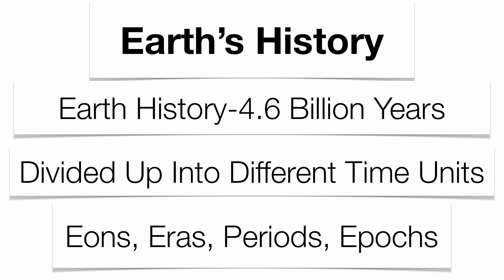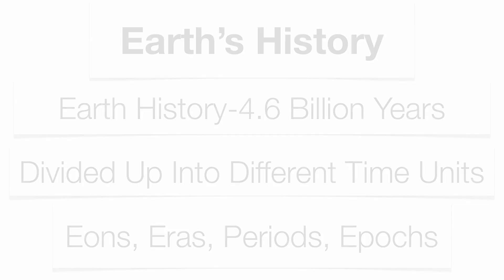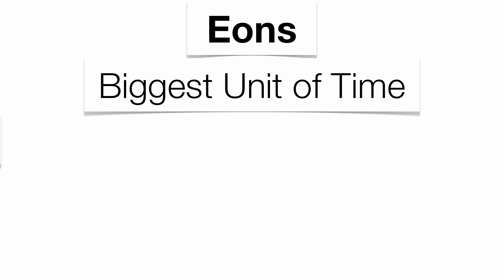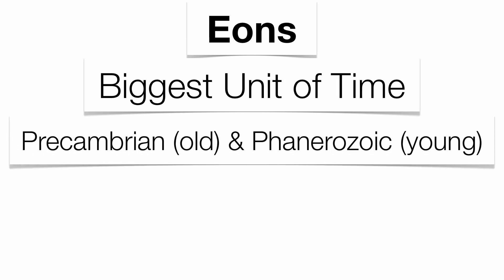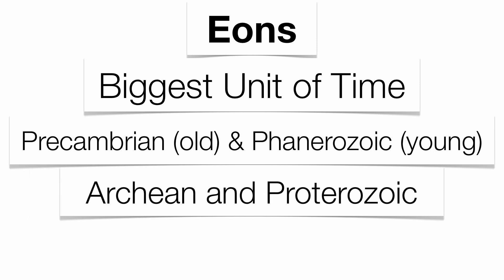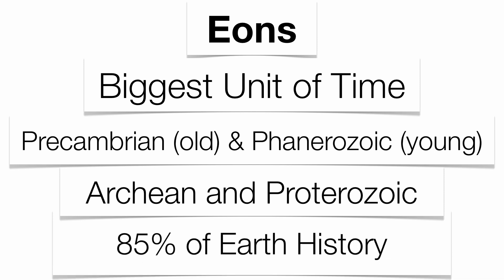Some of these time units span multiple millions of years, and there isn't always a major event that causes one to end and another to begin. The biggest unit of time is an eon. You have two of them: the Precambrian and the Phanerozoic. The Precambrian is big enough that it has to be broken up into two sub-eons called the Archean and the Proterozoic, simply because the Precambrian makes up about 85% of Earth's history.